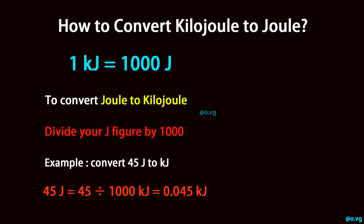To convert joule to kilojoule, divide your joule figure by 1,000. Example: convert 45 joule to kilojoule. 45 joule equals 45 divided by 1,000 kilojoule, which equals 0.045 kilojoule.